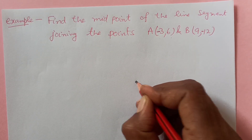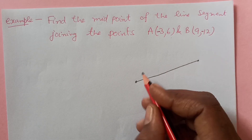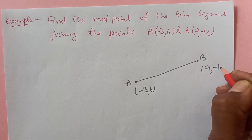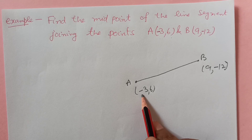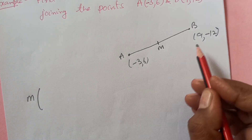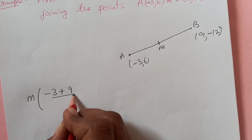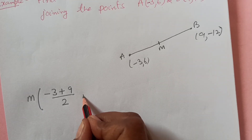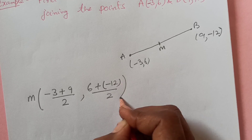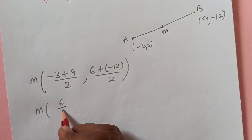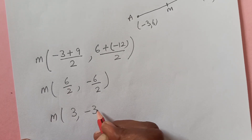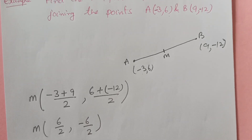For these questions, you need not find the exact coordinates on the coordinate axis — we just need a rough diagram. So A is (-3, 6) and B is (9, -12). You see we have a negative sign there, but don't worry, we will use the same method. M is: negative 3 plus 9 over 2, then 6 plus (negative 12) over 2. This gives 6 over 2 and negative 6 over 2. So the coordinates of M are (3, -3). This is how you handle the negative sign.